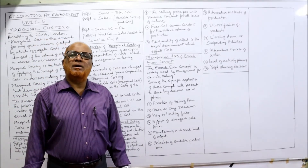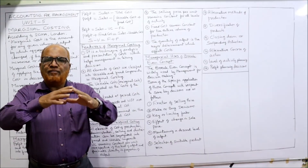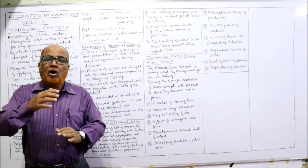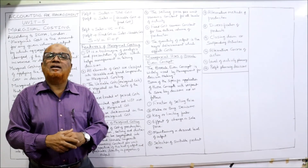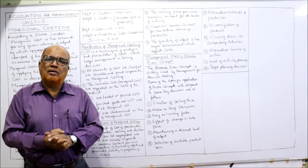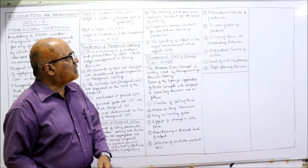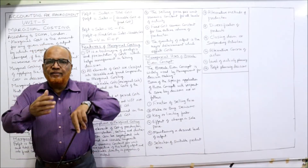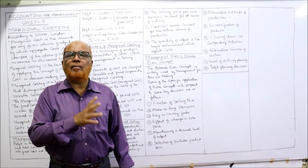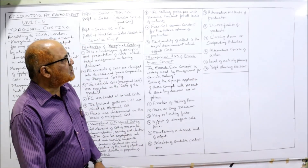The sixth application is selection of a suitable product mix. Many businesses produce multiple products — A, B, C, D, E — and management must decide how many units of each product to produce to maximize profit. This is the product mix problem, and marginal costing is very helpful here. The seventh application is alternative methods of production — management uses marginal costing to find out which method of production is more economical and suitable.